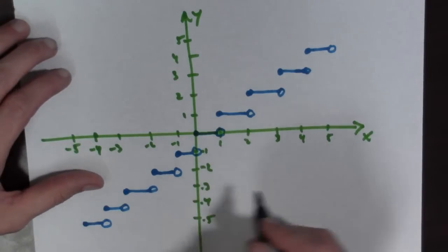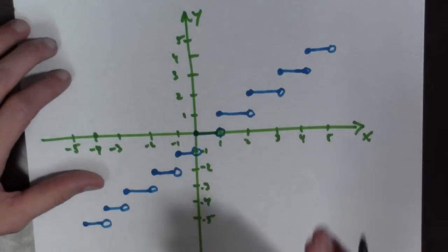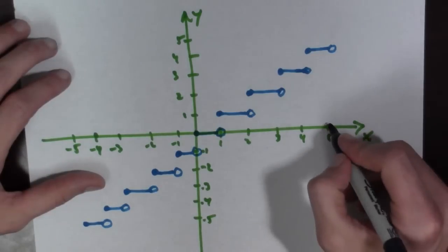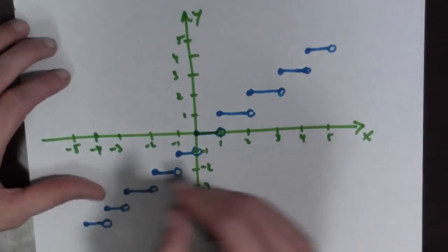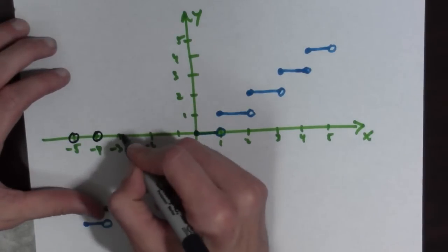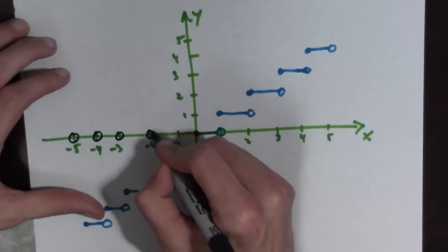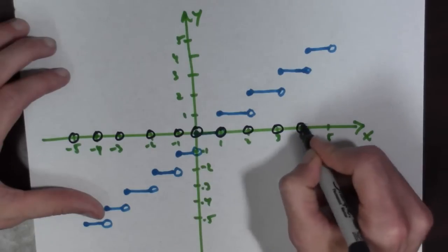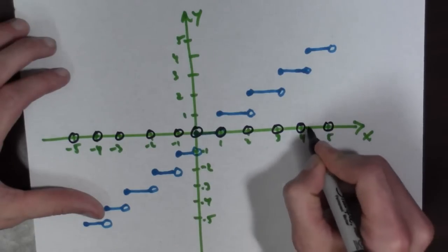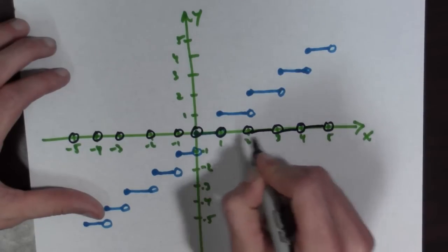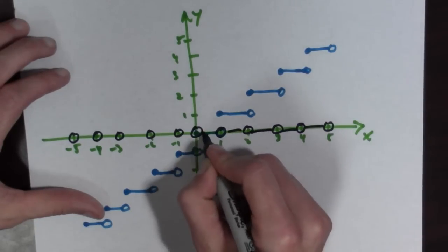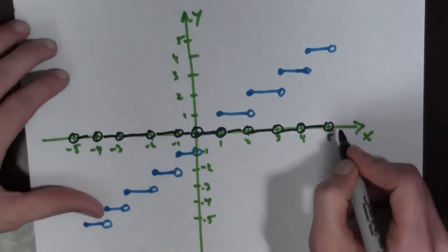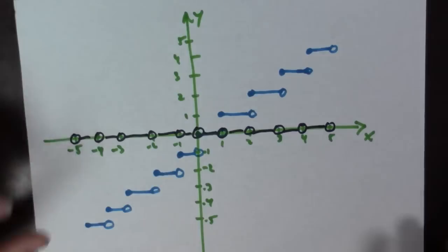But here I'm not sure what's even going on. So the greatest integer function — the derivative looks like this: it has open circles at every integer, and then it's 0 every place else. This is what the derivative of the greatest integer function looks like.